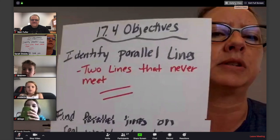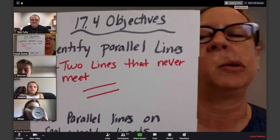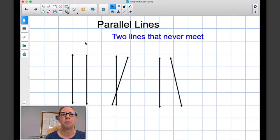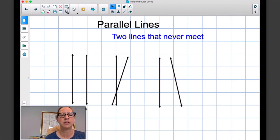I'm gonna be putting up the objectives. Today we are going to be talking about parallel lines. Can you identify one? Parallel lines are two lines that never meet. I'm gonna show you this first example here.